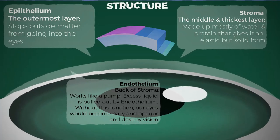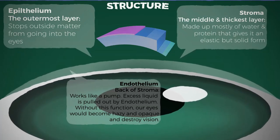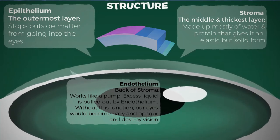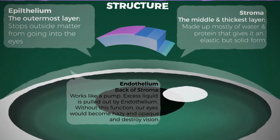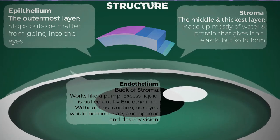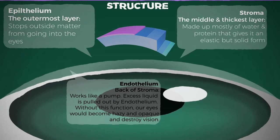The endothelium is a single layer of cells on the very back of the stroma. The aqueous humor, a clear fluid in the front chamber of your eye, is in constant contact with this layer. It works like a pump: the stroma absorbs excess liquid and the endothelium pulls it right out. Without this function, the stroma would become waterlogged and your cornea would get opaque and hazy.